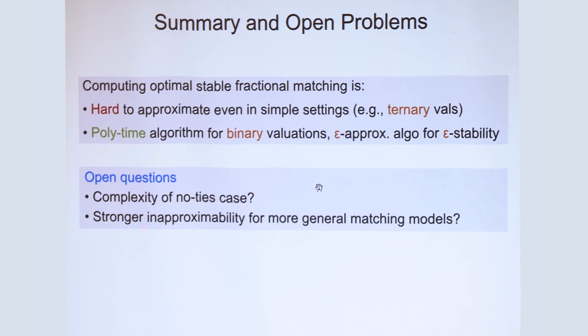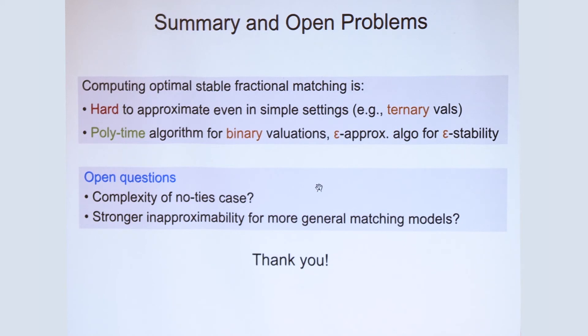Another open question is, can we obtain stronger inapproximability results for more general matching models? So what about stable roommates, for example? So that's all I have to say. Thank you very much for your time.